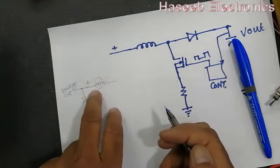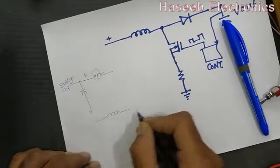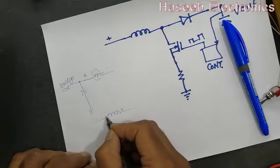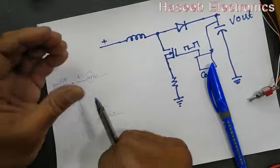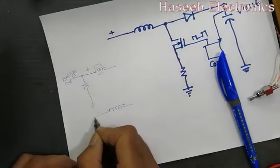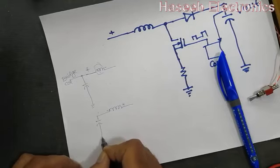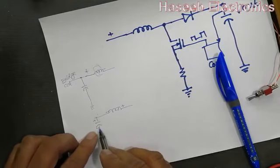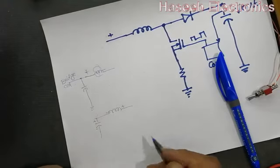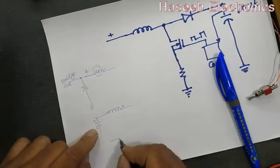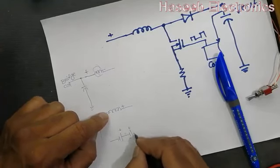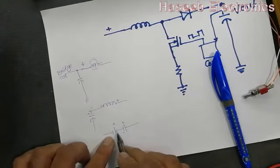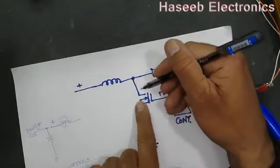When the magnetic field collapses, it induces a reverse voltage - in the first condition we applied positive voltage to this end of the inductor, making this end positive and this end negative. Now when the magnetic field collapses, it induces voltage of reverse polarity to the applied voltage. So due to the collapse, this end becomes negative and this end becomes positive, and its voltage level is proportional to the magnetic field that was induced.